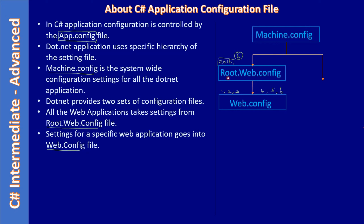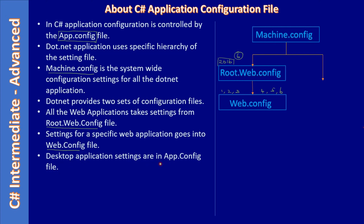Common settings for all web applications stay in root.web.config, while settings specific to a particular website are placed in that site's web.config file. This left-side route is for web applications. Desktop application settings, on the other hand, are stored in the app.config file — and in this sub-series we are going to deal with app.config.